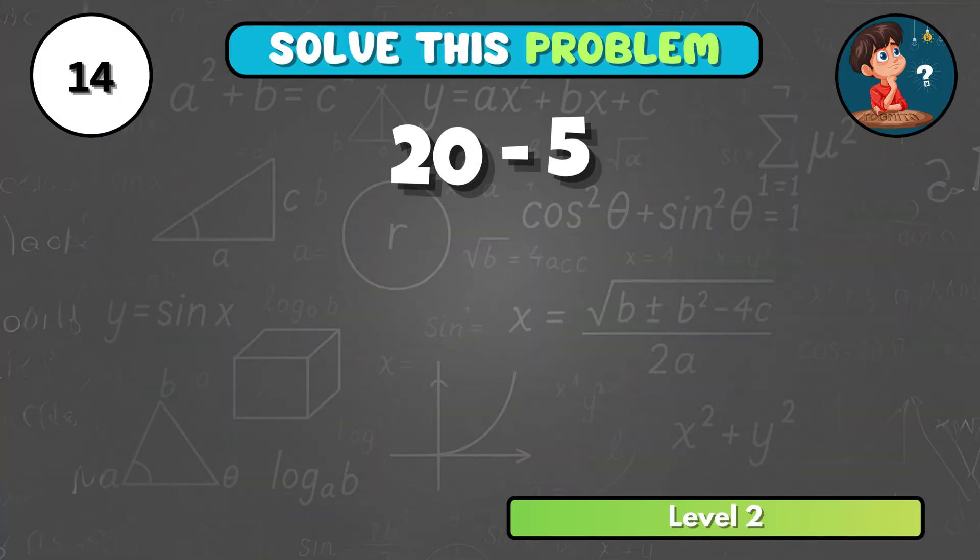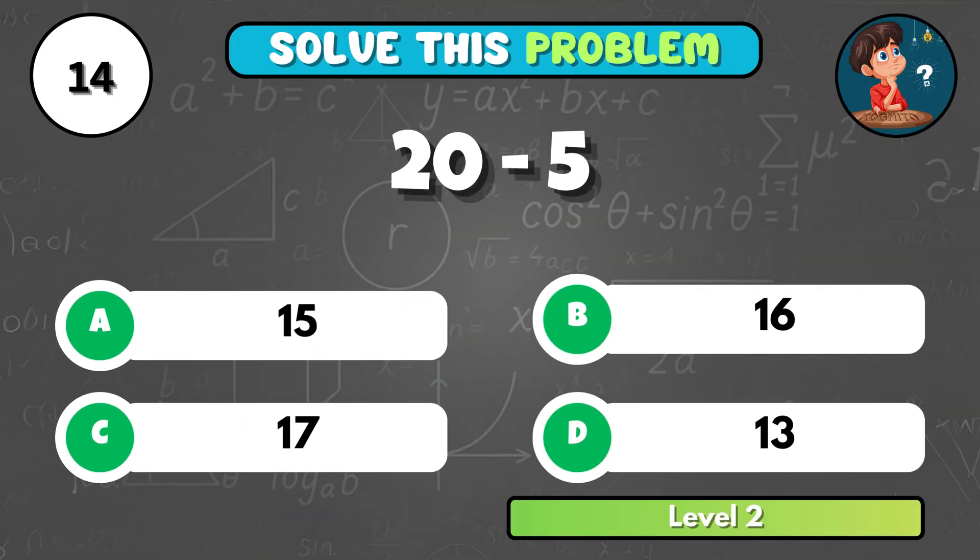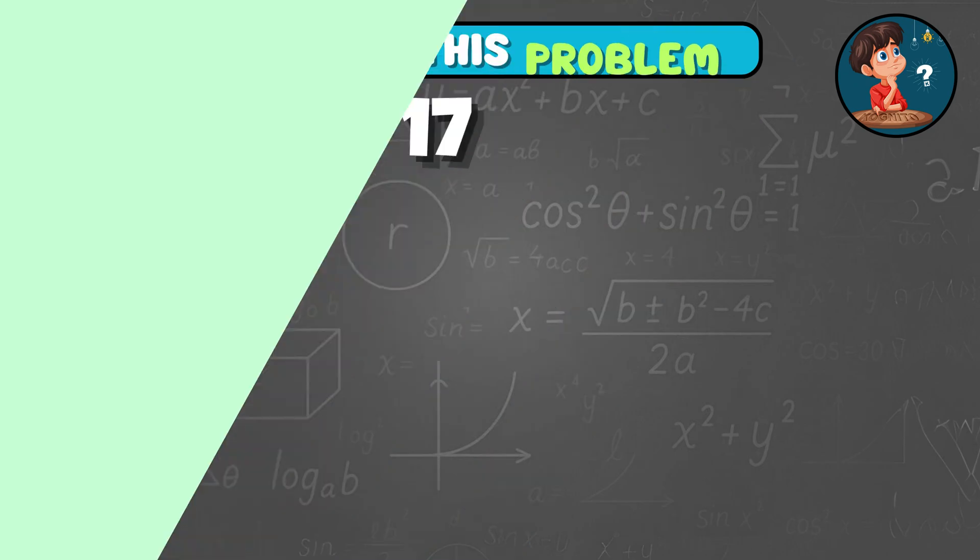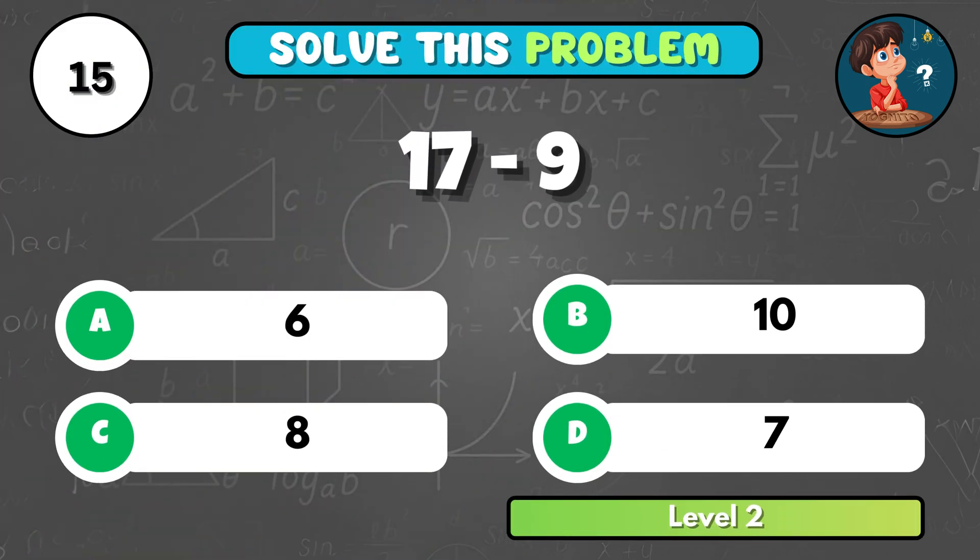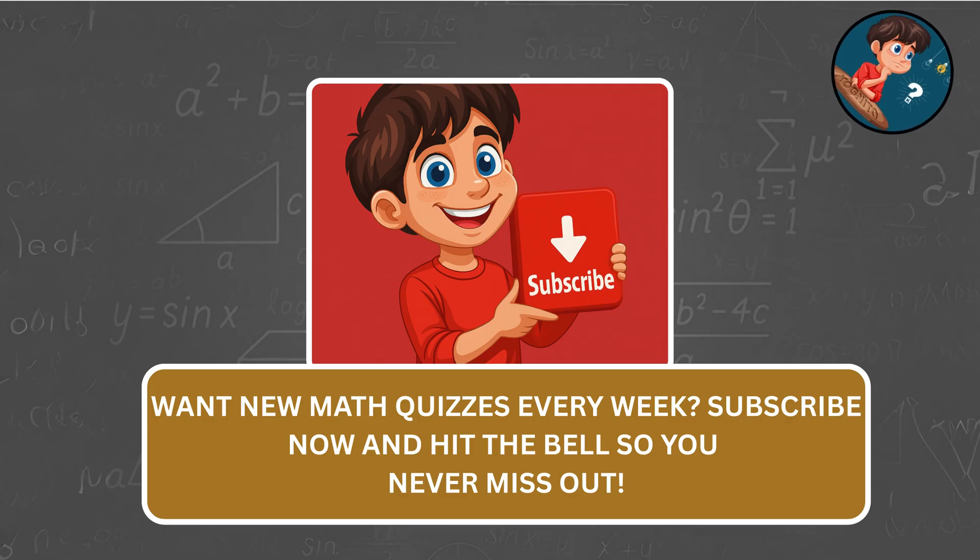What about 20 minus 5? That equals A, 15! If you subtract 17 minus 9, what do you get? That's C, 8! Want new math quizzes every week? Subscribe now and hit the bell so you never miss out!